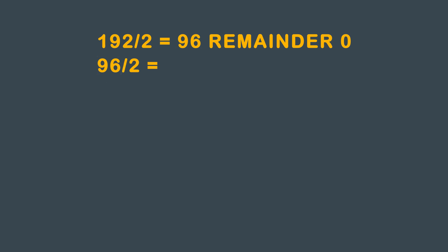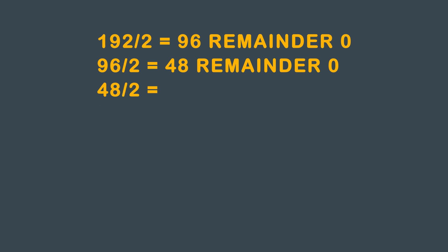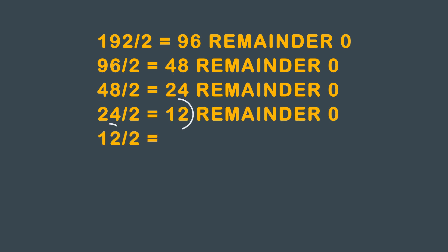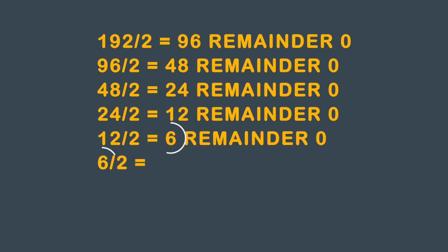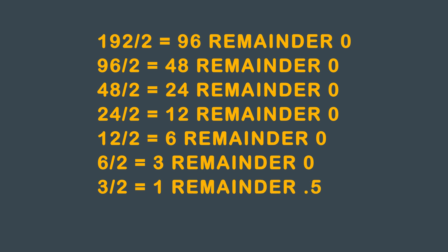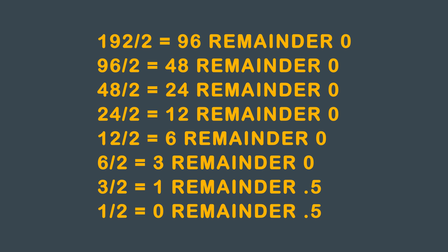Take 96, divide that by two, you get 48 and you have no remainder. Take 48, divide that by 2, you get 24 and you have no remainder. Take 24, divide that by 2, you get 12 and you have no remainder. Take 12, divide that by 2, you get 6 and you have no remainder. Take 6, divide that by 2, you get 3 and you have no remainder. Take 3, divide that by 2, you get 1 and you have a remainder of 0.5. Take 1, divide that by 2, you get 0 and you have a remainder of 0.5.